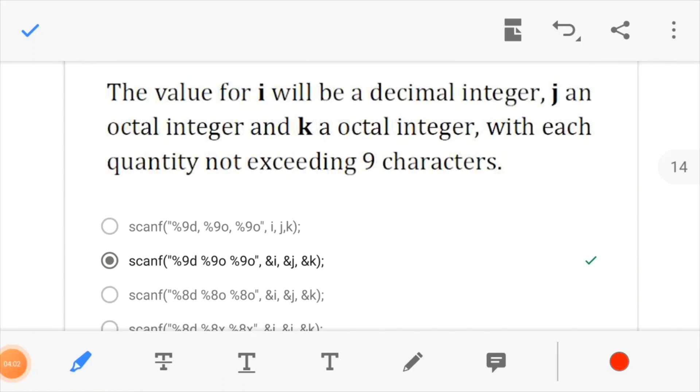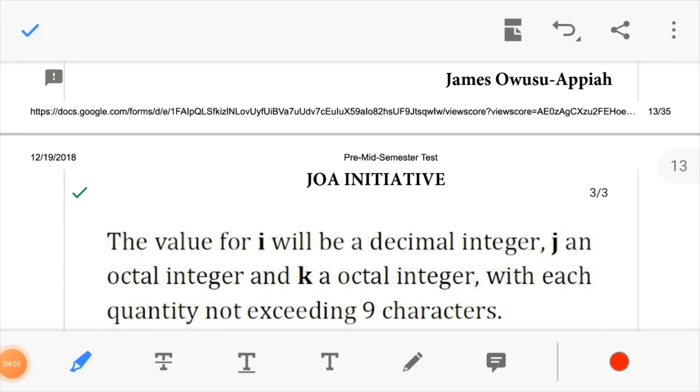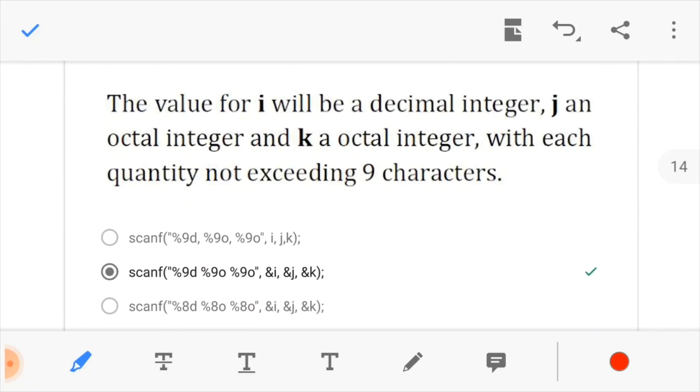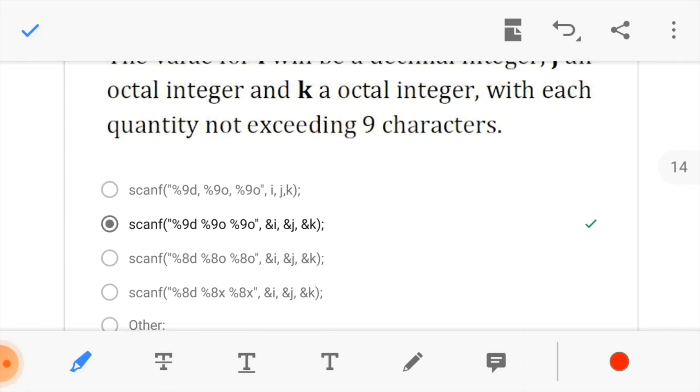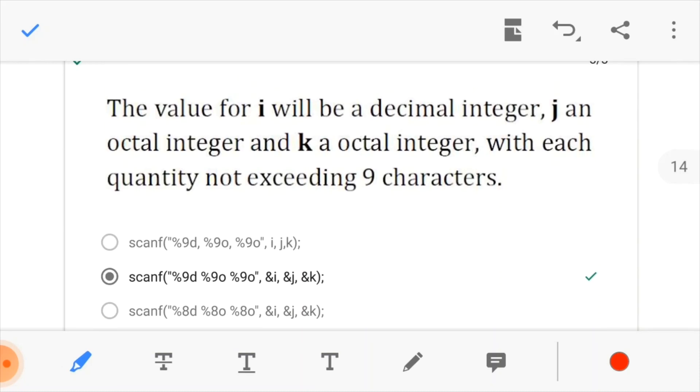Now, the question reads, the value for i will be a decimal integer, j an octal integer, and k an octal integer, with each quantity not exceeding nine characters. So we are supposed to write a scanf function.